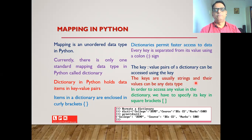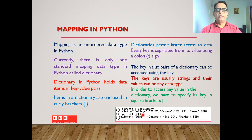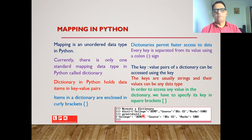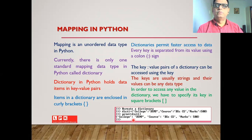To access any value in the dictionary, specify its key in square brackets. For example: dict1 = {'college': 'dsmp', 'course': 'dsccs', 'marks': 500}. The first two values are strings and the third is an integer. If I give the command print(dict1), the content of the dictionary will be displayed on the screen. Dictionary is a very useful data type and programmers frequently use it for storing data values.